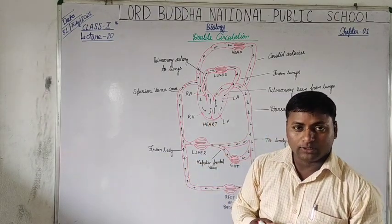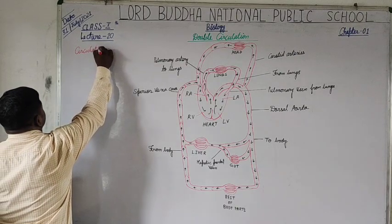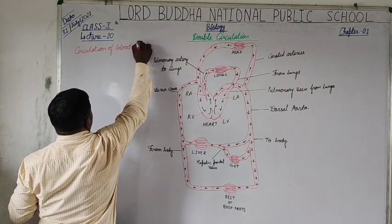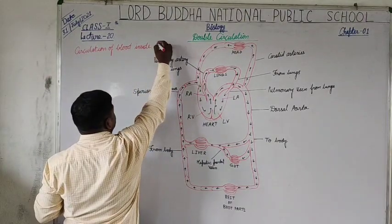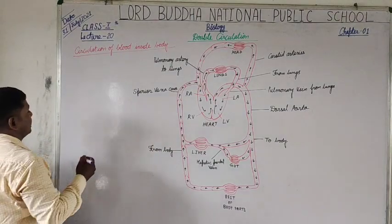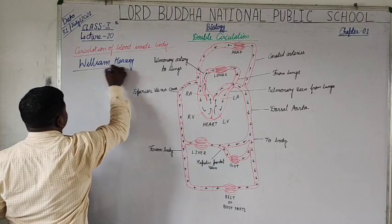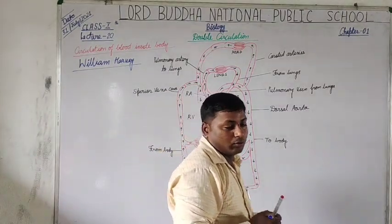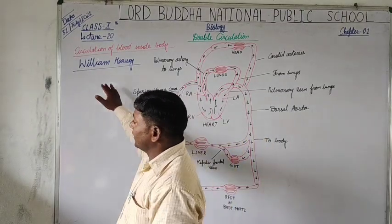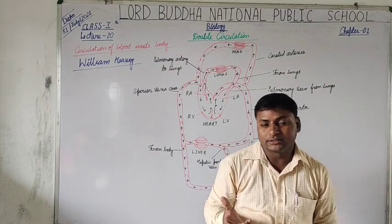For your kind information, the circulation of blood inside the organism's body, including humans, was first reported by William Harvey. William Harvey was the first biologist who discovered the circulation of blood in the body. That's why he is also regarded as the father of blood circulation.